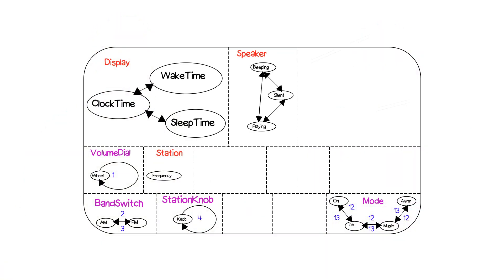Here are the additions to our machine to handle events one, two, three, four, twelve, and thirteen. With respect to event one, that's the volume knob — similar to our station one. For switching the band between AM and FM, those are events two and three, one going to the left and one going to the right. And similarly, sliding the mode switch to the right and left are events twelve and thirteen.